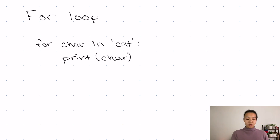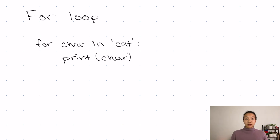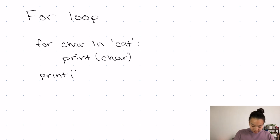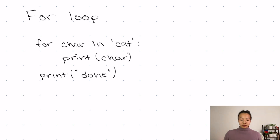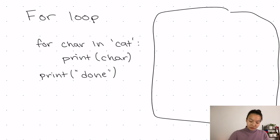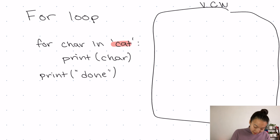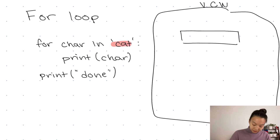And then at the very end, I'm going to print something that signifies I'm done with this loop — so I might say print done. Now what's this going to look like in our virtual computer world? So we have some string here, cat. I'm going to represent that string as a little sequence of boxes.